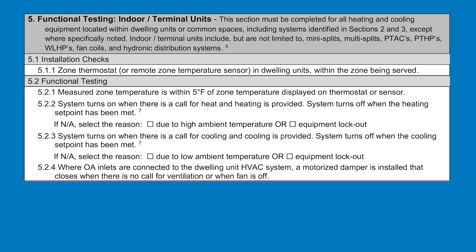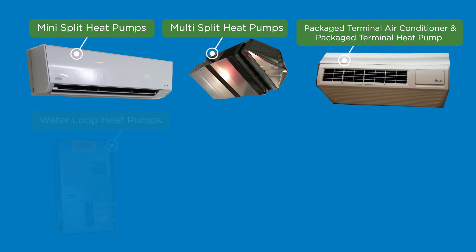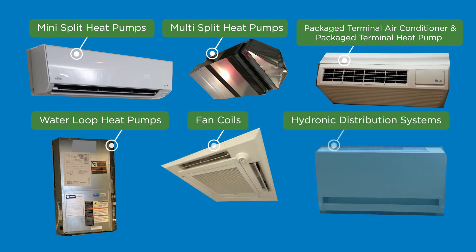Indoor or terminal units include, but are not limited to, traditional split ACs and heat pumps as well as mini-split heat pumps, multi-split heat pumps, PTACs or packaged terminal air conditioners, PTHPs or packaged terminal heat pumps, water loop heat pumps, fan coils, and hydronic distribution systems, among the many possible types.